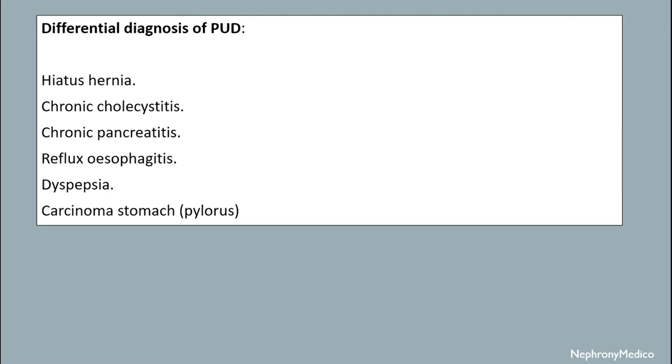Differential diagnosis includes hiatus hernia, chronic cholecystitis, chronic pancreatitis, reflux oesophagitis, dyspepsia, and carcinoma of the stomach.